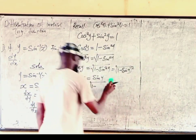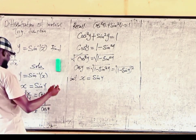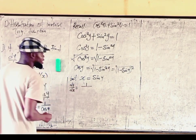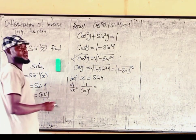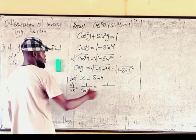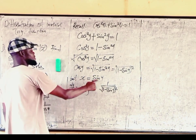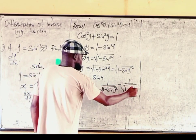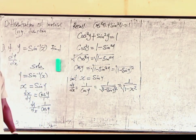Bringing back 1 over cos y, and substituting cos y as the square root of 1 minus sin squared y, and since sin y equals x, we can replace sin y with x. So dy over dx equals 1 over the square root of 1 minus x squared. This is the final answer, as a function of x.